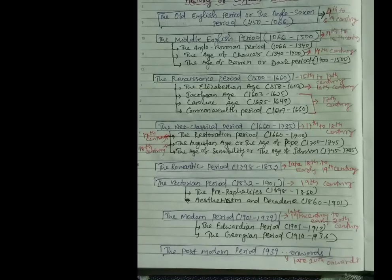The next one is the Neoclassical period. It started from 1660 to 1785, and it started from late 17th century until mid-18th century. Again, the Neoclassical period divided into three ages: Restoration period, then your Augustan period, then the Age of Sensibility. Restoration period belonged to 17th century, Augustan age belonged to 18th century, like that.